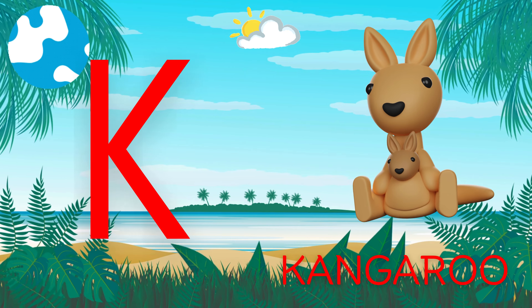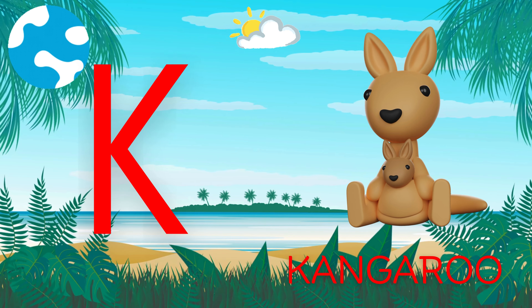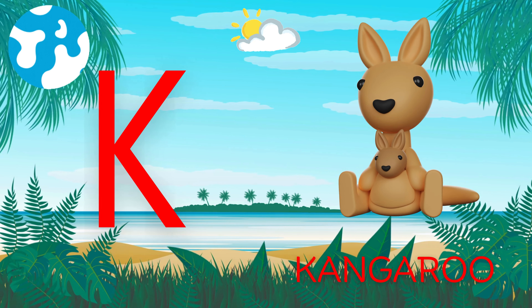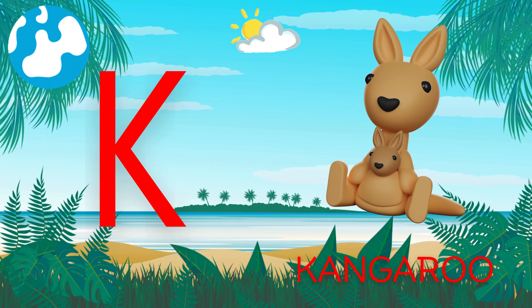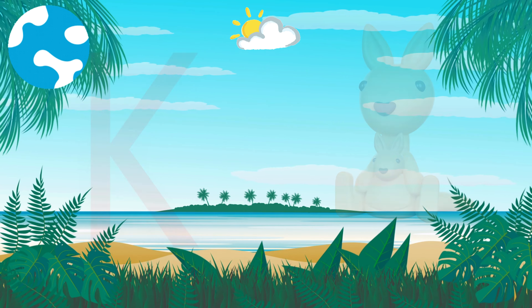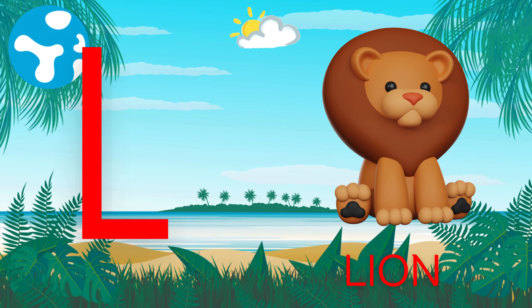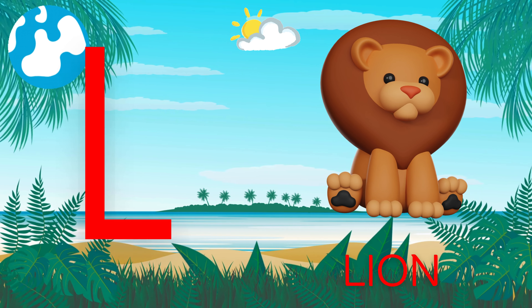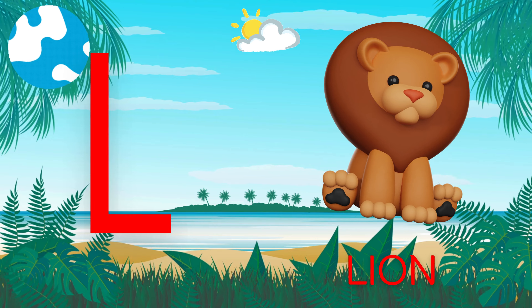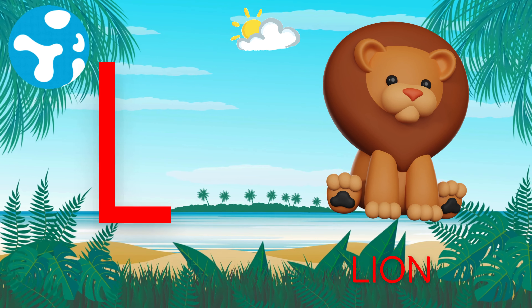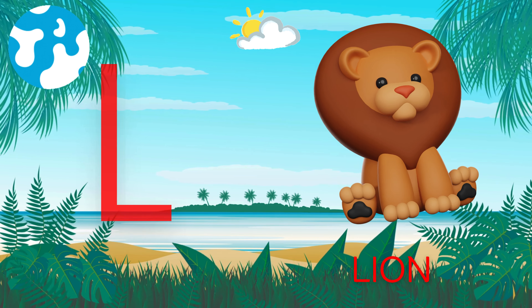K is for kangaroo. K, K. Kangaroo. K is for kangaroo. K, K, K. L is for lion. L, L. Lion. L is for lion. L, L, L.